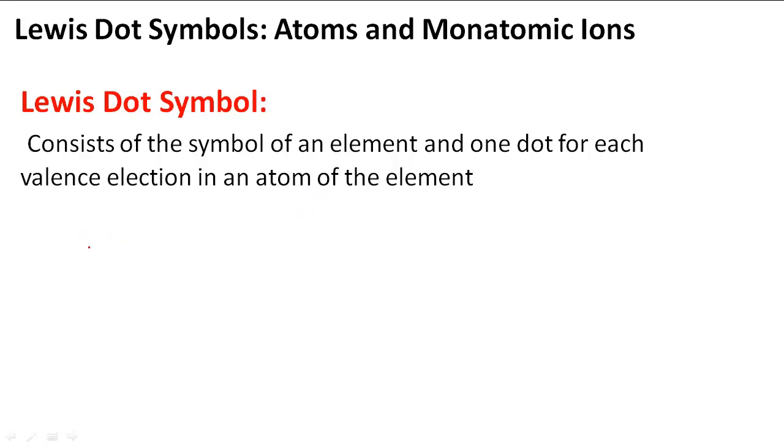Let's take, for example, hydrogen. Hydrogen has an atomic symbol of H. To write the Lewis dot symbol, we would write a dot like this. You could write it on the top, you could write it on the left like this. But it represents that hydrogen only has one valence electron.